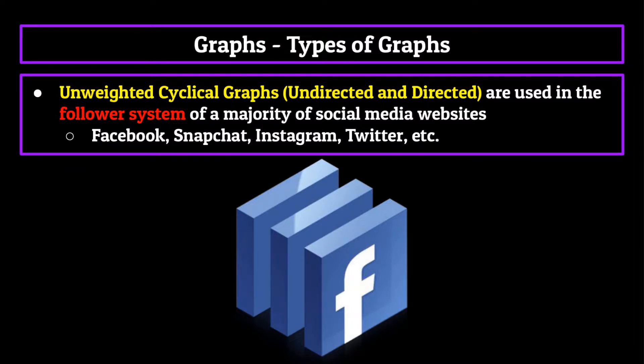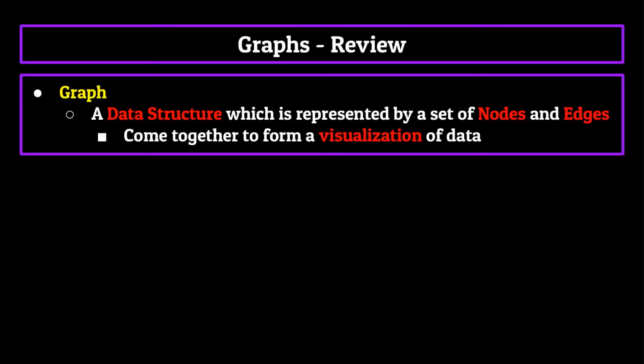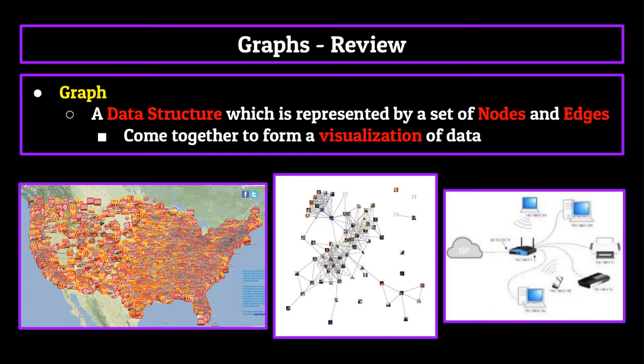And with that concludes our discussion on graphs. As a review, a graph is a data structure which is represented by a set of nodes and edges which come together to form a visualization of data. Whether that data be food locations on a map, friends on social media, or IP addresses on your computer, the different types of graphs provide a multitude of implementations in computer science.